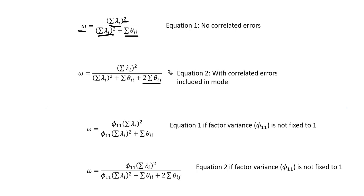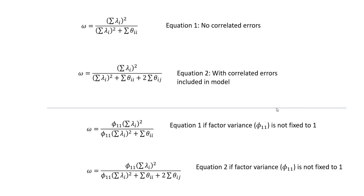Equations one and two can be used to compute McDonald's Omega when you fix the factor variance to one. If you didn't fix the factor variance to one, you would rely on modified equations that include the factor variance as a multiplier in the numerator. You could set up a spreadsheet to compute these manually, but most folks aren't interested in that approach, so the phantom variable approach accomplishes this more quickly.